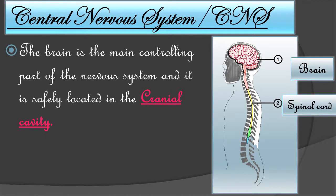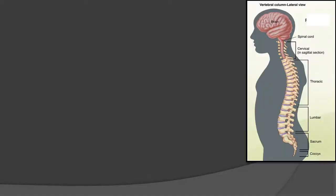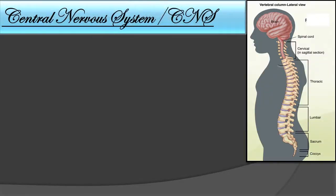The cranial cavity provides protection to the brain, and the spinal cord is protected by the vertebral column. You can observe here the filamentous spinal cord — the vertebral column provides protection to the spinal cord, and the cranial cavity gives protection to the brain.